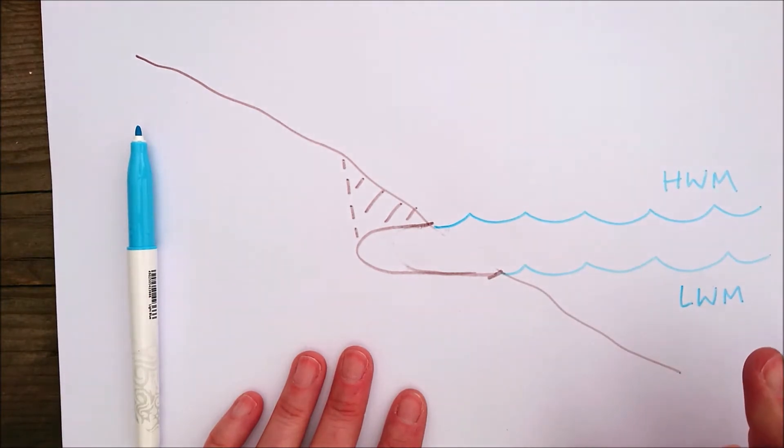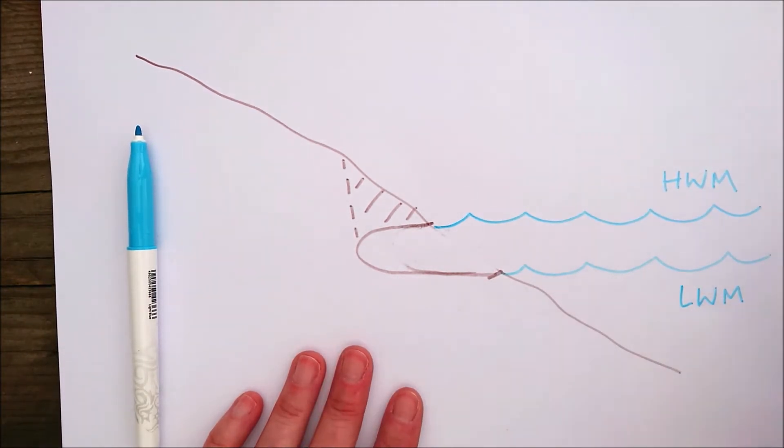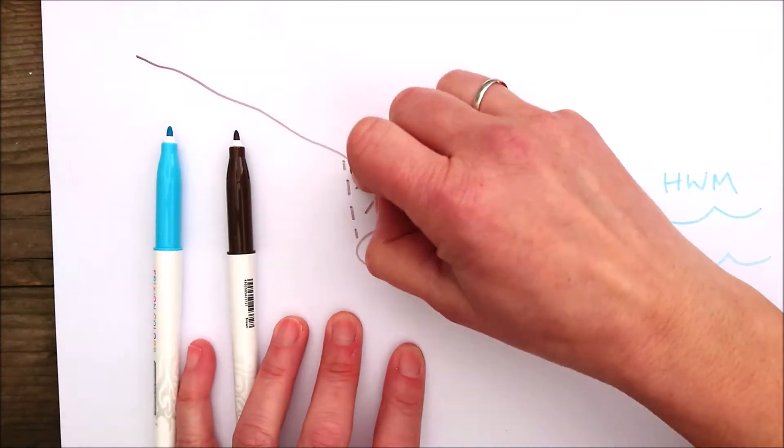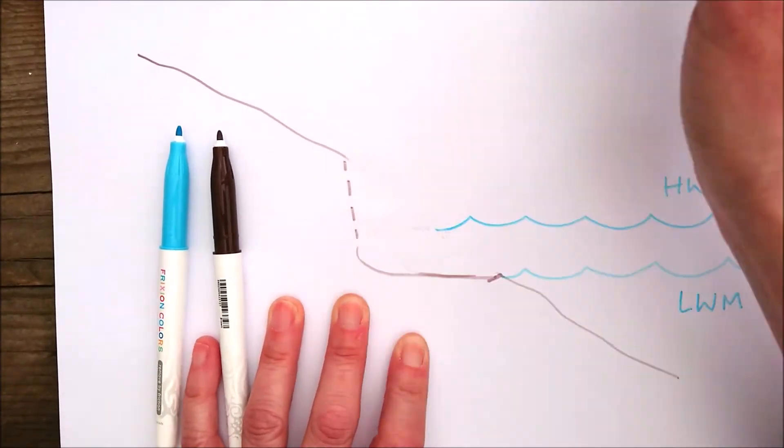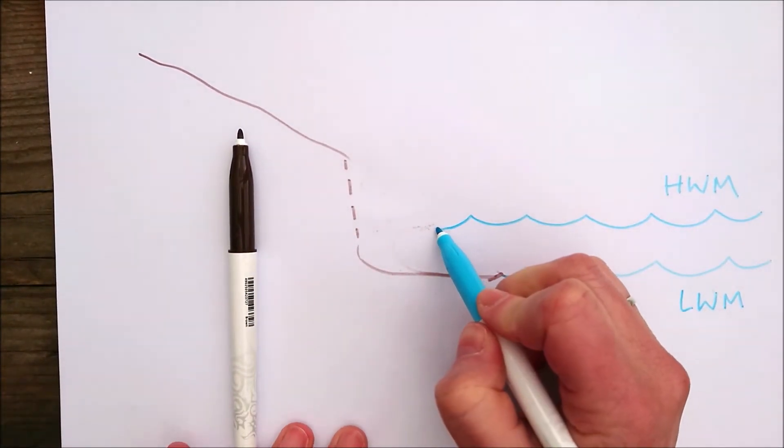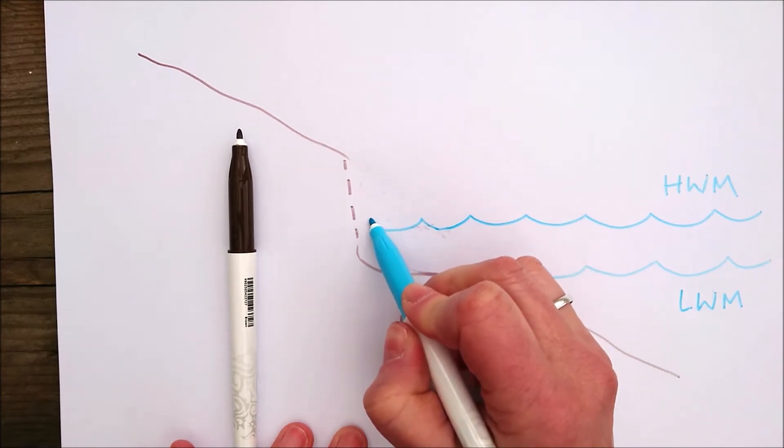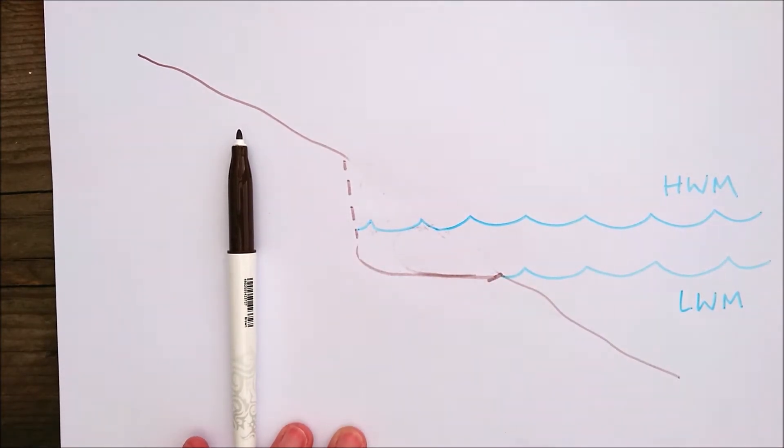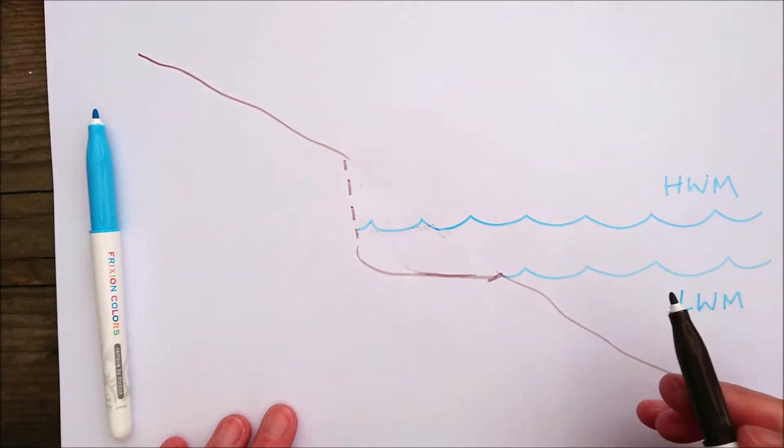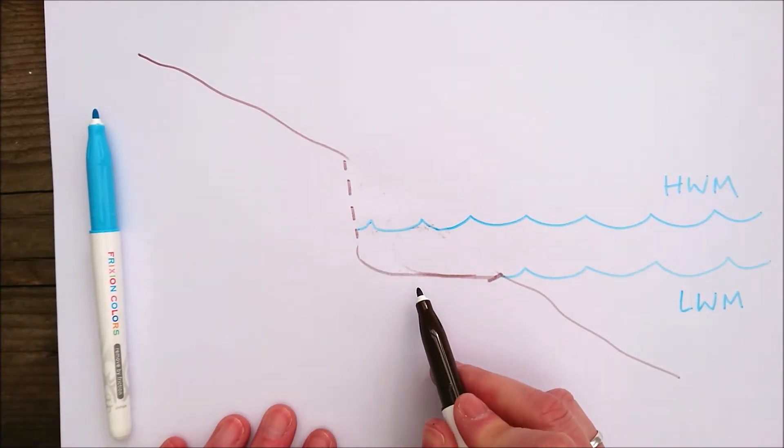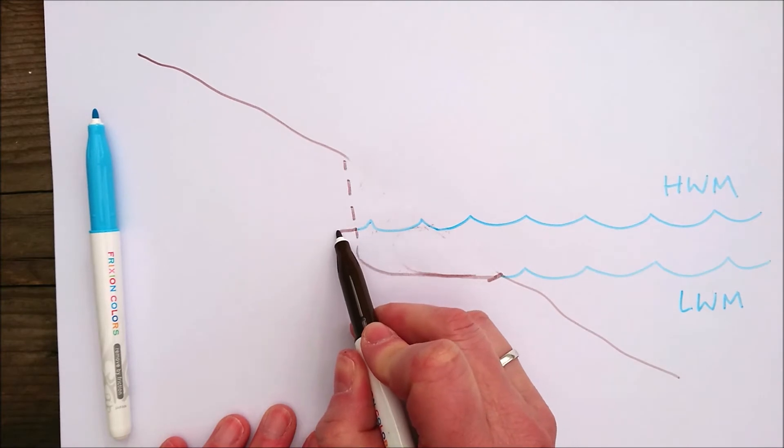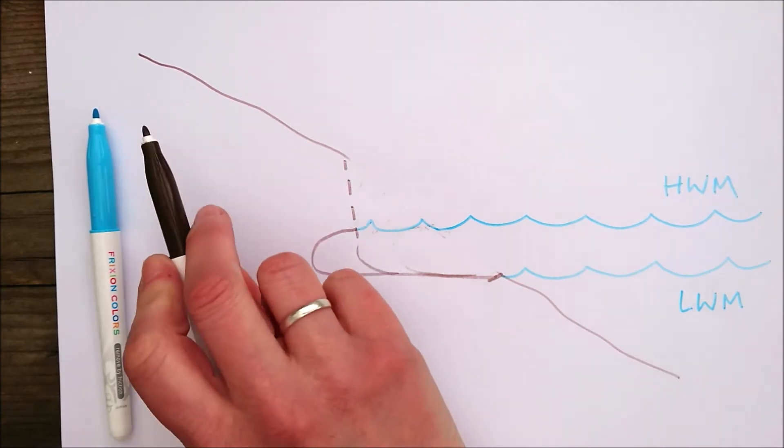Eventually it's just going to fall into the sea. This allows the seawater to come further and further up. Now that process is going to continue again because between the high watermark and the low watermark you're going to have this erosion taking place again.